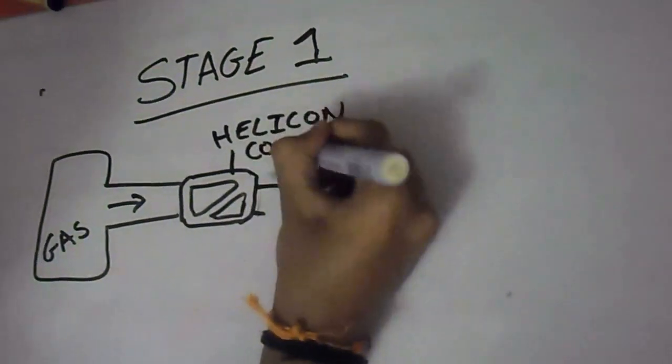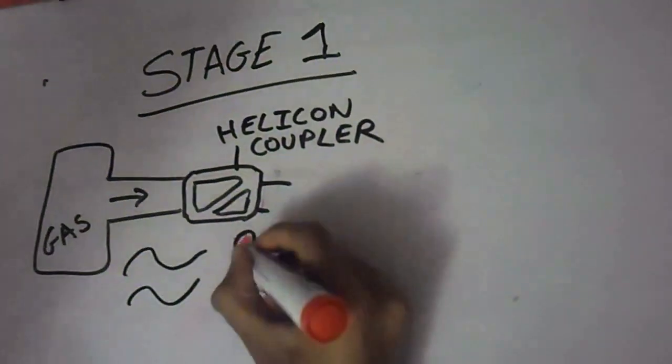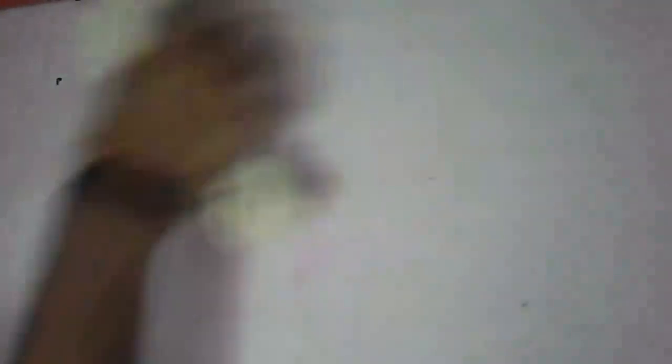The next step is where the gas actually turns to plasma. The helicon coupler induces the low-frequency helicon wave through radio-frequency heating into the gas. This is basically science for it gets heated up to form plasma.